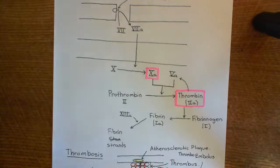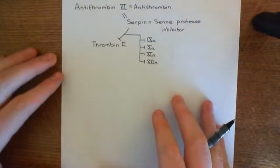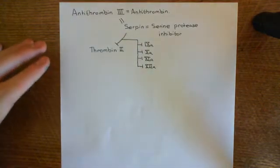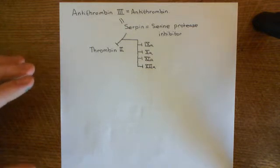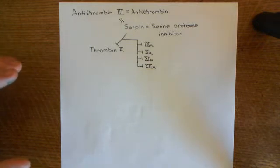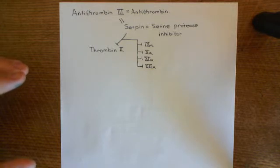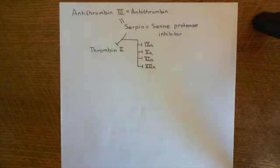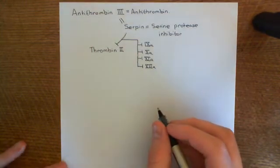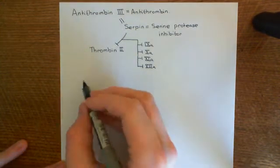Now we understand how antithrombin-III stops coagulation. But let's talk about how antithrombin-III itself is activated, because this is an interesting topic. The major endogenous way of activating antithrombin-III is that it is going to bind to a structure on the surface of endothelial cells.